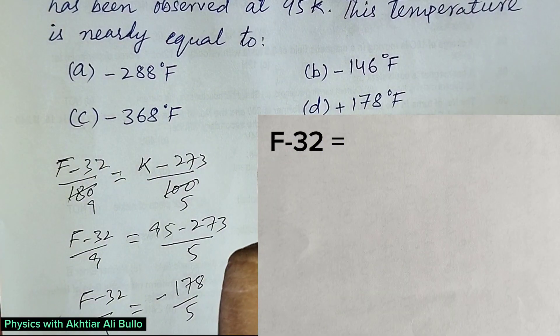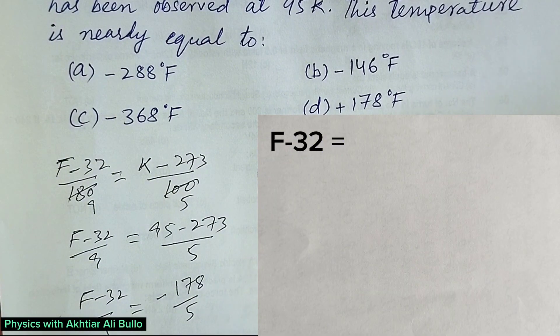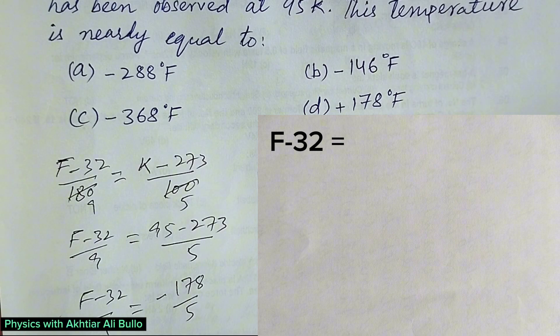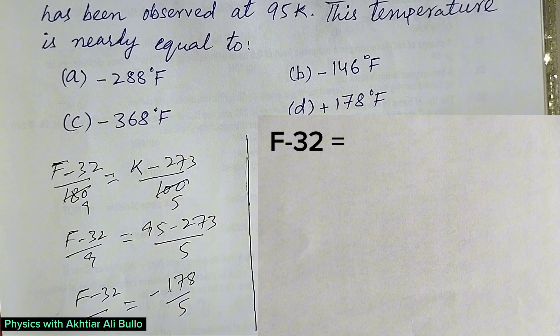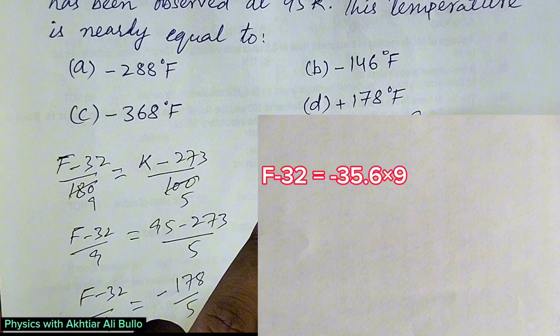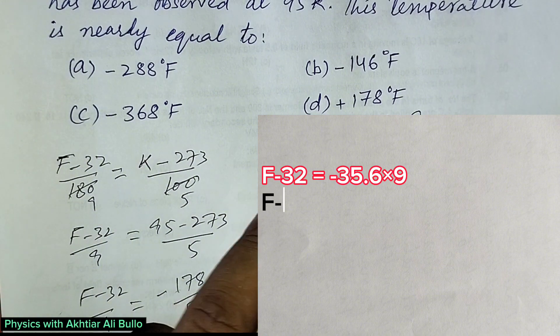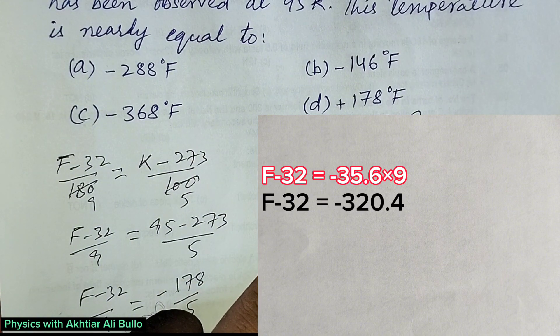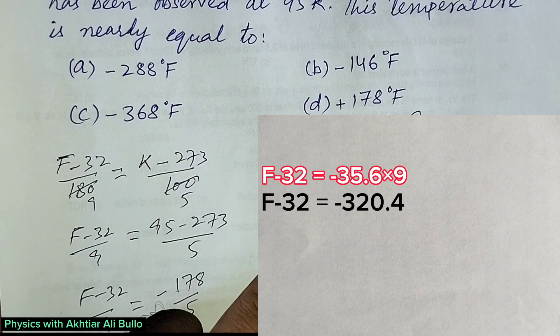So F - 32 equals -178 divided by 5, which is -35.6, times 9. F - 32 = -320.4.